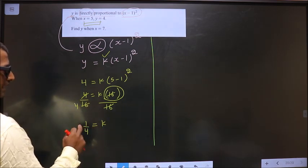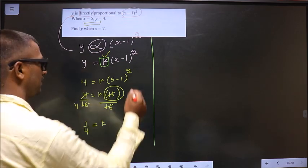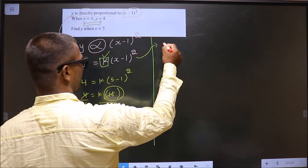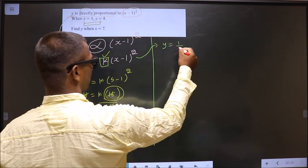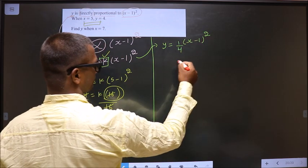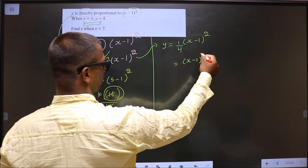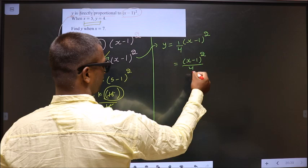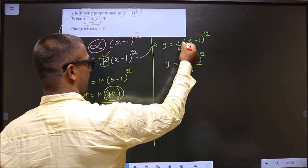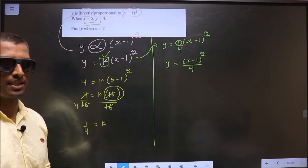Now, replace k equal to 1 by 4 here. Then this equation will become y equal to 1 by 4 of x minus 1 whole square. So x minus 1 whole square by 4. Whether I write this 1 or not, it is not going to make any change.